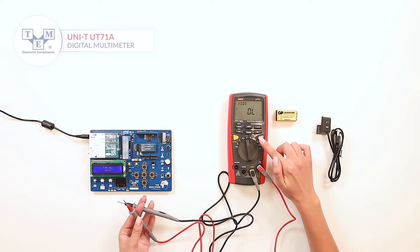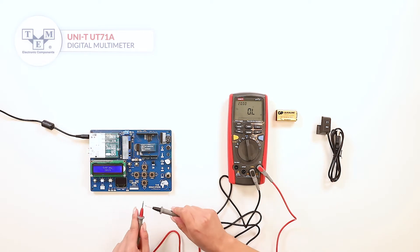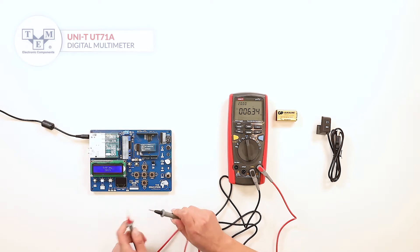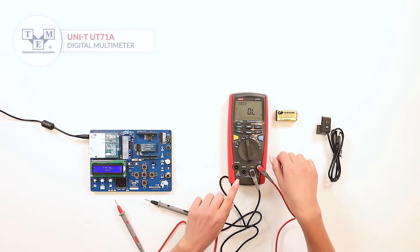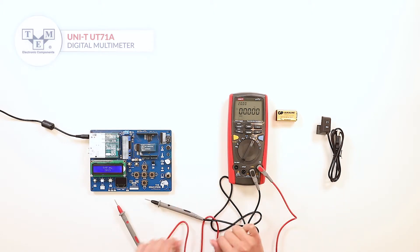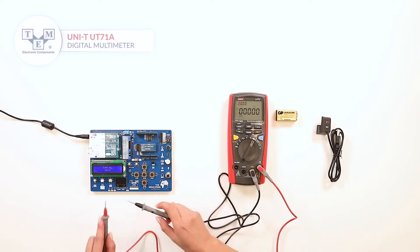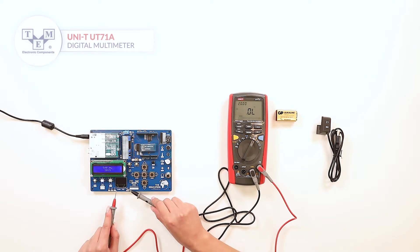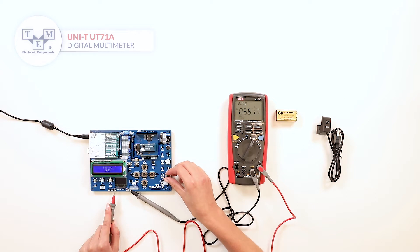The digital multimeter can also perform diode and continuity tests. It can also display the duty cycle and the frequency.